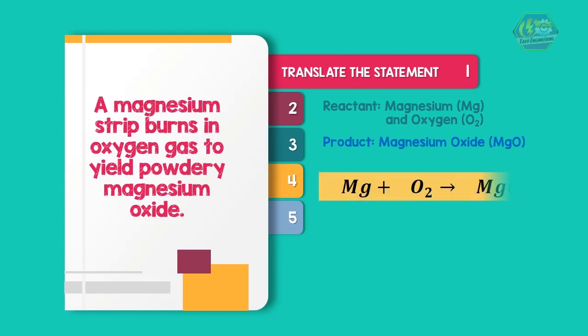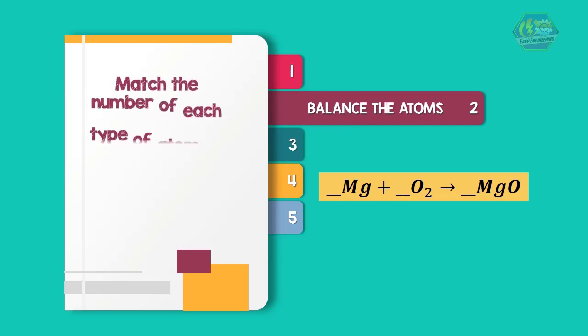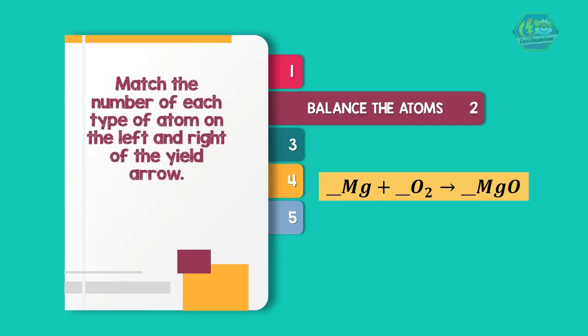At the beginning of balancing the equation, we put a blank in front of each formula to remind us that we must account for its atoms. Step 2: Balancing the atoms. Match the number of each type of atom on the left and right of the yield arrow. In each blank we are placing a balancing stoichiometric coefficient. Balancing is easiest when we start with the most complex substance, or one with the largest number of different types of atoms.